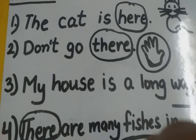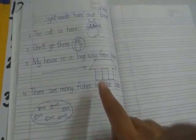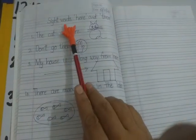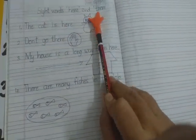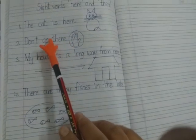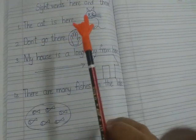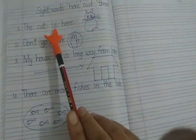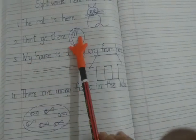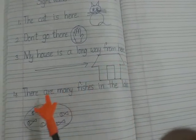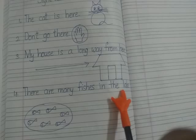So children, you have to do this work in your English notebook. First you have to write the heading: 'Sight Words — Here and There'. Then you have to circle the sight words 'here' and 'there' in the sentences: 'The cat is here,' 'Don't go there,' 'My house is a long way from here,' and 'There are many fishes in the lake.'